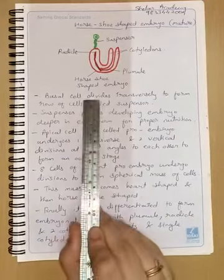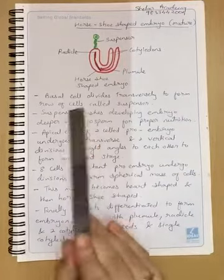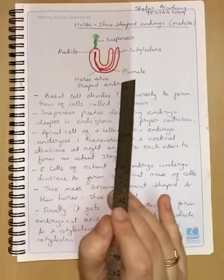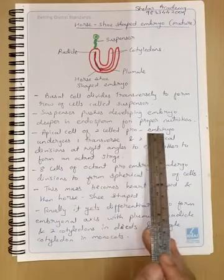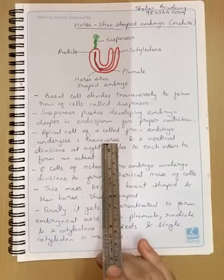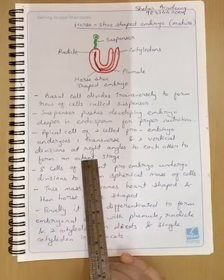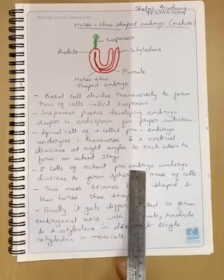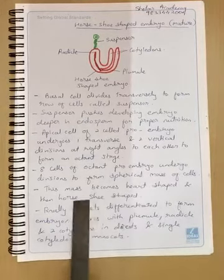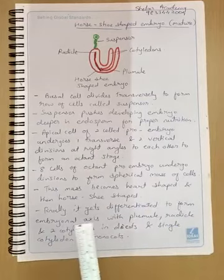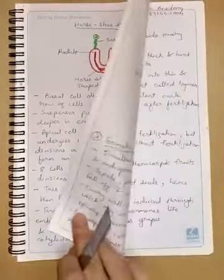We saw that the basal cell, the suspensor, makes a row of cells by transverse division. The suspensor cells will push the embryo into the endosperm. Then the apical cell in the pro-embryo stage divides one time transversely and then two times vertically at right angles to each other. This divides into the octant stage - from single cell to eight-cell stage. Then the eight-cell stage, which is pro-embryo, divides into a mass of cells called spherical or globular embryo. Then later it converts into heart shape and then horseshoe shape. Finally it becomes embryonal axis. So this is how embryo formation is completed.